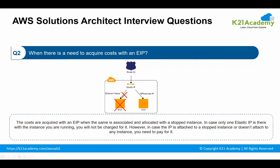Moving to our next question: when is there a need to incur cost with an EIP? EIP stands for Elastic IP Address. The cost is incurred with an EIP when it is associated and allocated with a stopped instance. In case only one elastic IP is there with the instance you are running, you will not be charged for it. However, if the IP is attached to a stopped instance or does not attach to any instance, you need to pay for it.